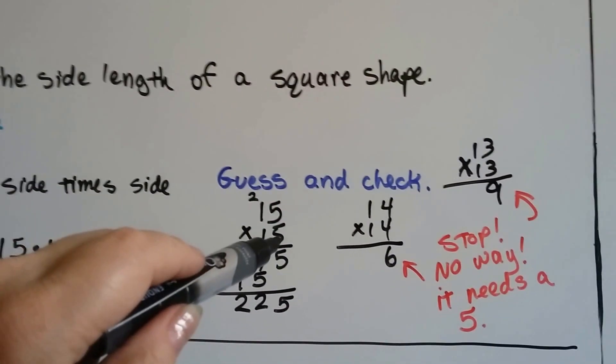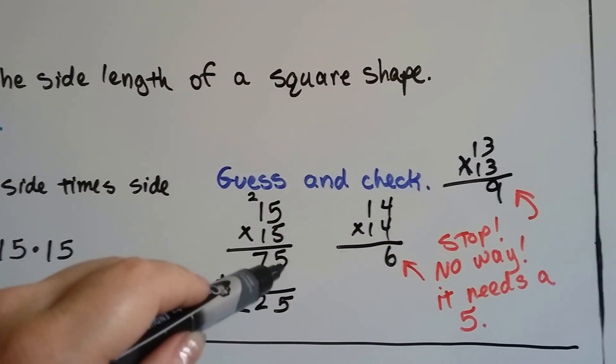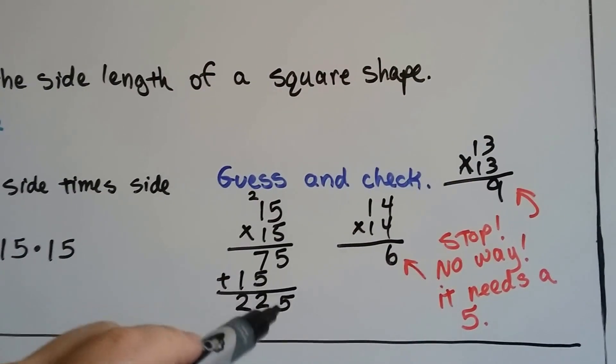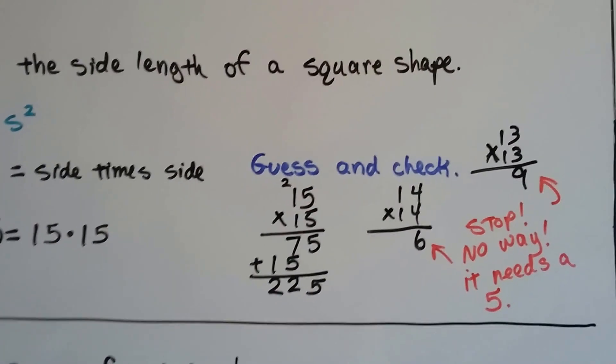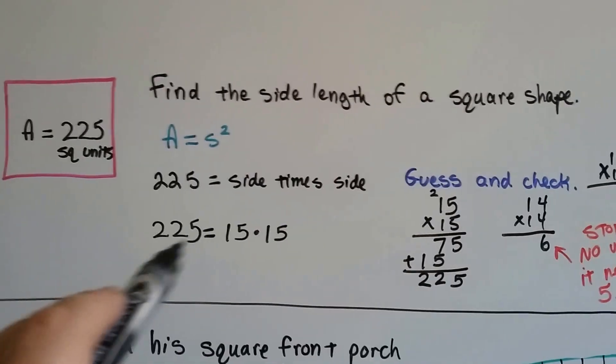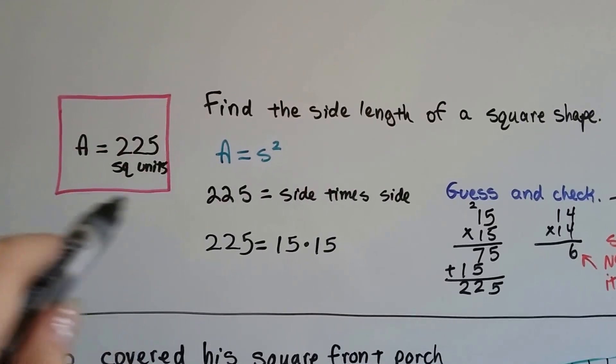So when I did 15 times 15 and I saw that 5 times 5 was 25 and that 5 was going to drop, I knew I was on the right track. So I finished multiplying, came up with the 225, and I knew that the sides were 15.